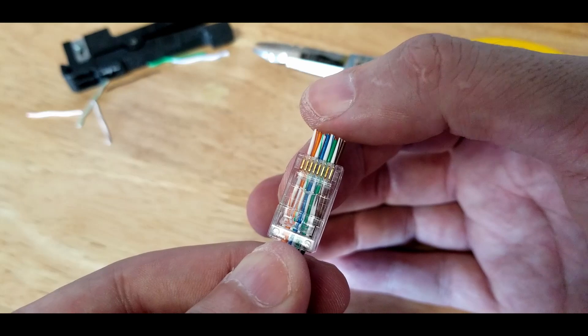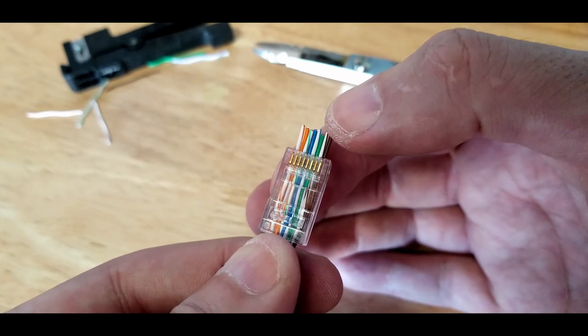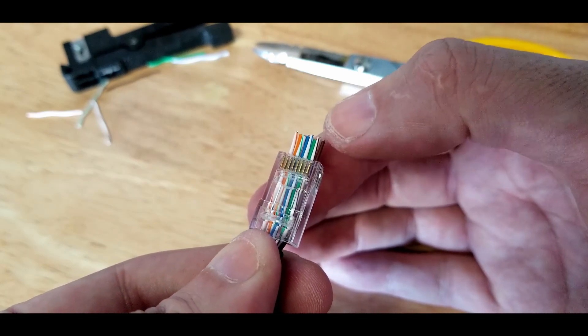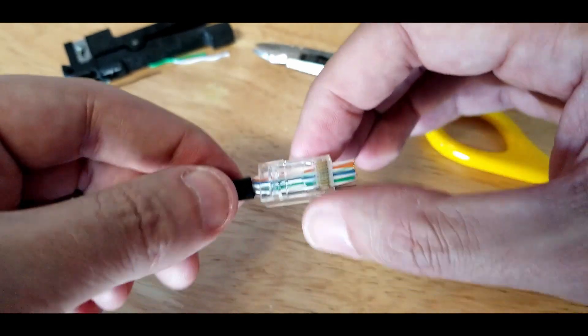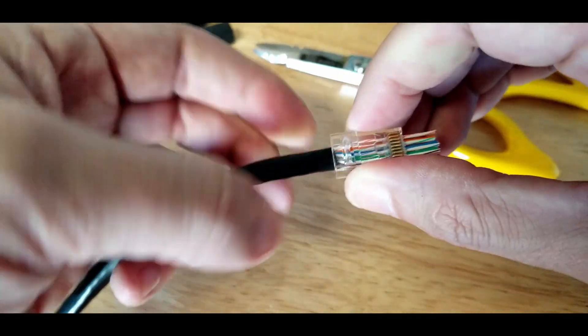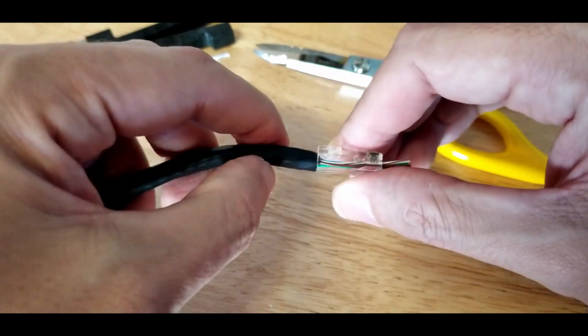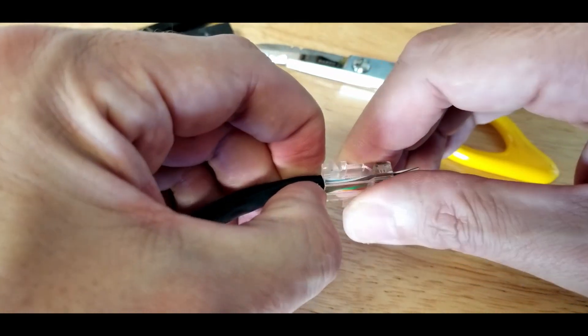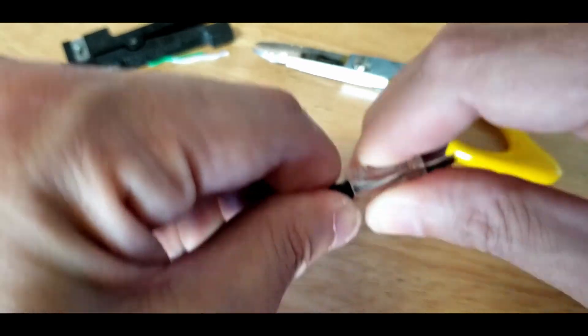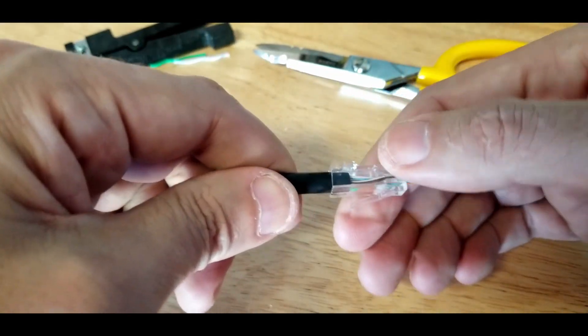Orange white, orange, green white, blue, blue white, green, white brown, brown. So that's good. That's going to pass through the end. Now this cable is super thick, you can see how it doesn't fit in there very well. I have to squeeze the ends of the jacket together to get it to fit up inside there. You want it to be underneath of this because that is what gets crimped on the jacket to hold the connector on there.